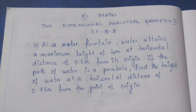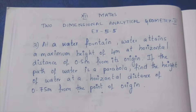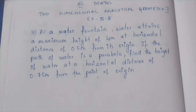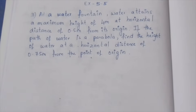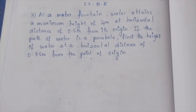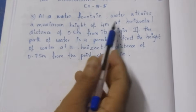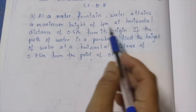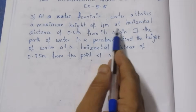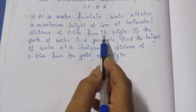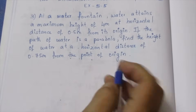Hello viewers, I am Matli. In the 12th grade, 2 Dimensional Analytical Geometry, Exercise 5.5, Third sum. At a water fountain, water attends the maximum height of 4 meters, at the horizontal distance of 0.5 from its origin.